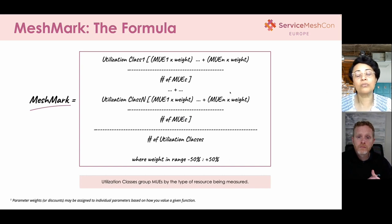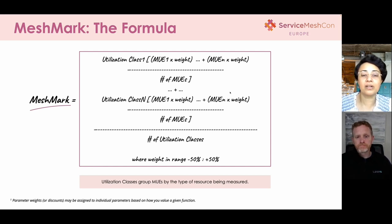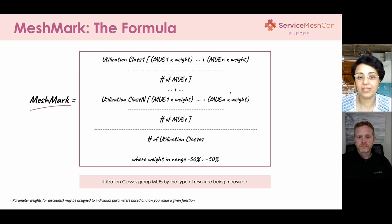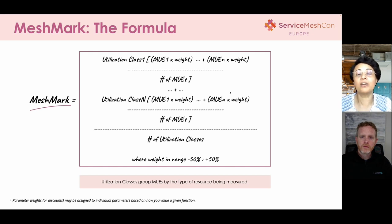So how do we define Meshmark? Here is a definition we propose and are working towards building. Essentially, you have utilization of different kinds of resources, and these utilization classes can be categorized as compute utilization, network utilization, or any other resource utilization. As part of each class, you'll have some efficiency metrics, which we call MUE. You attach weights to those MUEs — a set of 1 to N metrics with weights — and you sum them up as a ratio of the number of MUEs. That becomes your Meshmark. You can give higher priority to utilization 1 or N, and that one index can tell you how well it is mapped to your value vector.